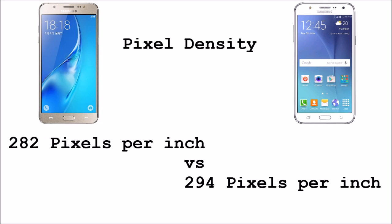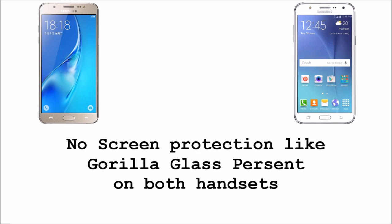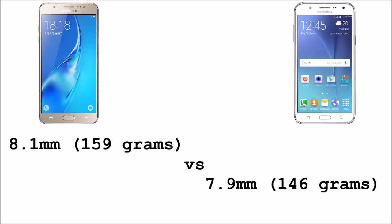Coming to the pixel density, the pixel density on the J5 2016 is 282 pixels per inch while the pixel density on the J5 2015 is 294 pixels per inch. As for screen protection, there is no protection on the screens of both handsets — yeah, that's not good at all. Coming to the feel and weight, the J5 2016 is 8.1mm weighing 159 grams while the J5 2015 is 7.9mm weighing 146 grams.